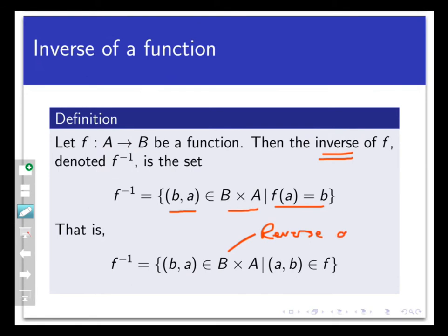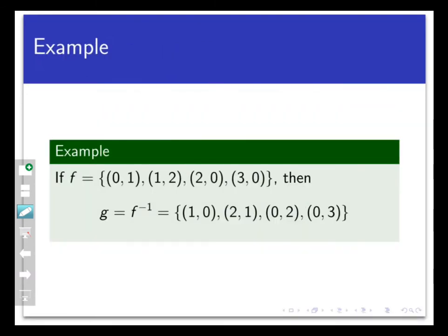So for example, earlier we had the function F being the set of ordered pairs (0,1), (1,2), (2,0), (3,0). This was a function from Z4 to Z4, remember, that obeyed all the rules for being a function. Then what I was calling G, the set of pairs we got by reversing the coordinates, we're now going to call F inverse. So F inverse is the set that consists of (1,0), (2,1), (0,2), and (0,3).